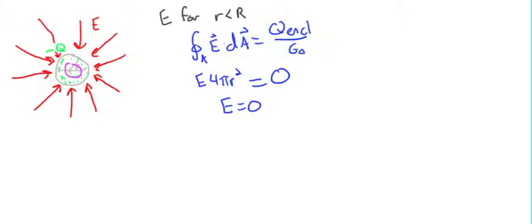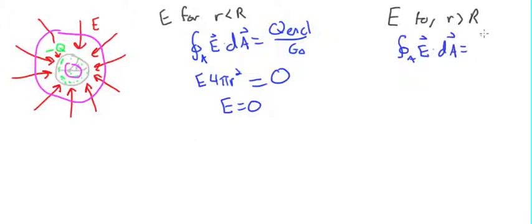Now we can do the second part, where we now draw a Gaussian surface outside. It'll be a concentric sphere that encapsulates this conducting sphere. Now we will solve for the E-field for r greater than big R. We'll rewrite Gauss's law. That's E dot dA, that's going to be equal to the charge enclosed over epsilon naught.